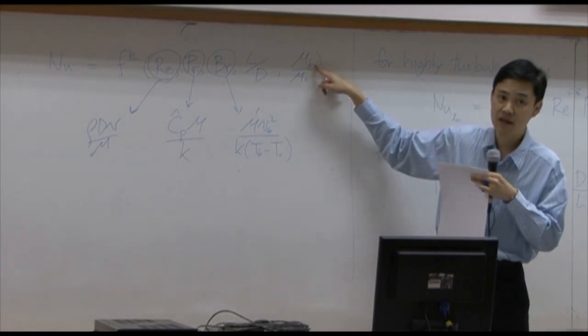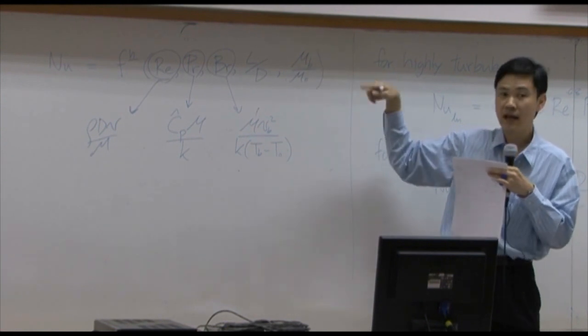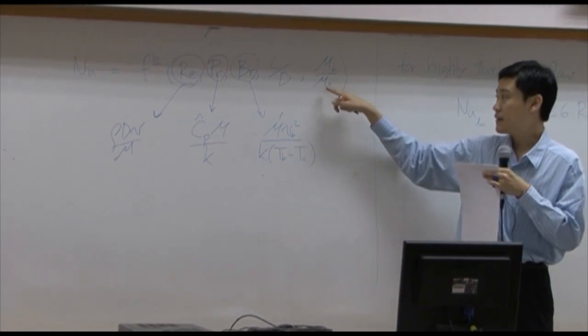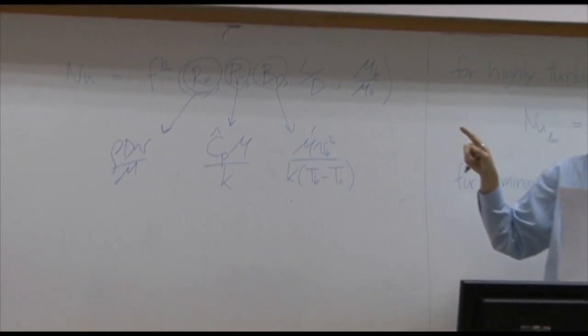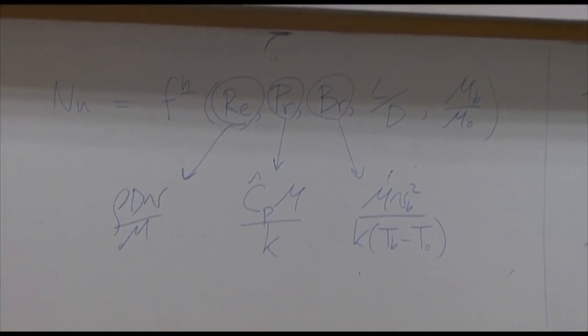Viscosity B here is bulk viscosity, viscosity in the bulk area of the fluid. Viscosity zero here is viscosity near the surface or in the area of film resistance.